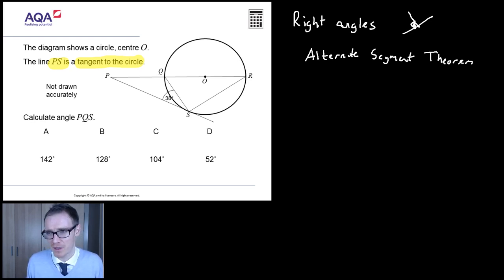Calculate angle PQS. Now if you don't know which angle PQS is, you're not going to get this question right. So let's take our time on this. P to Q to S. Start at P, go to Q, go to S. Label on the angle that we need. So all we've got to do is work out that angle.